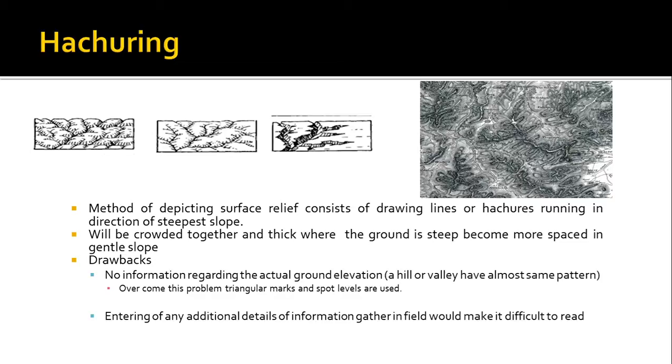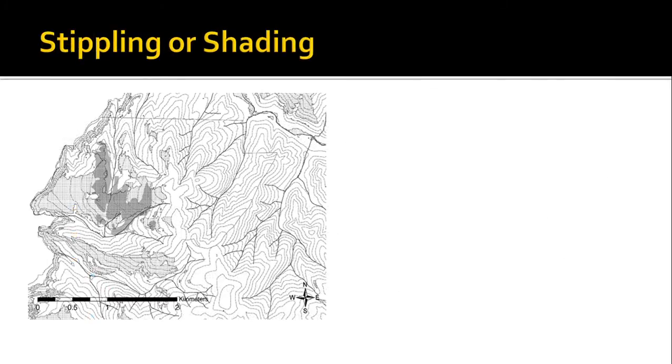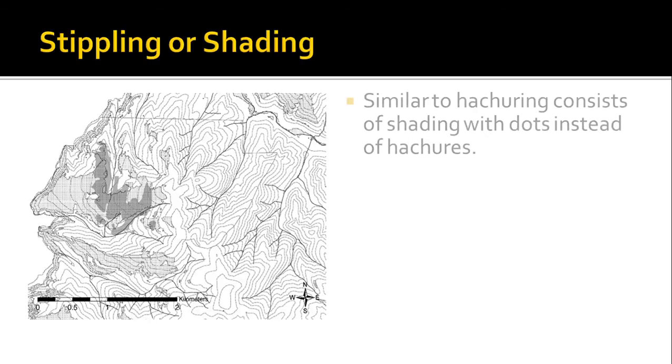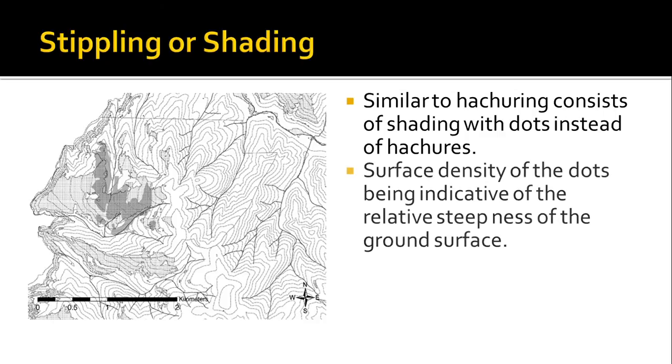And the second method is stippling or shading, in which dot lines or even shades were used. Similar to hachures, it consists of shades with dots instead of hachures. So instead of drawing short lines in this method, they are using dots as well as shades.